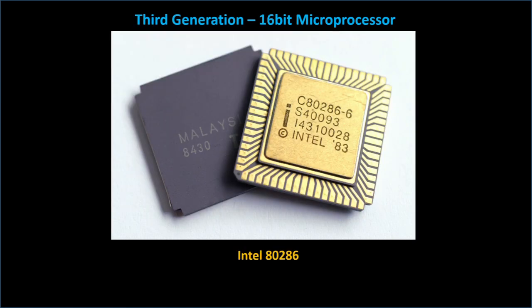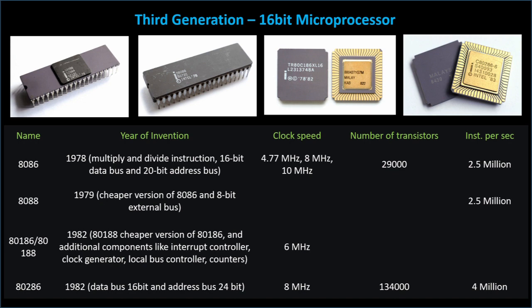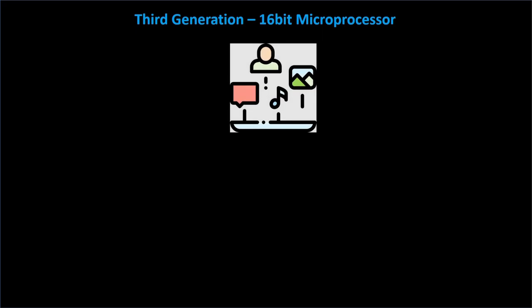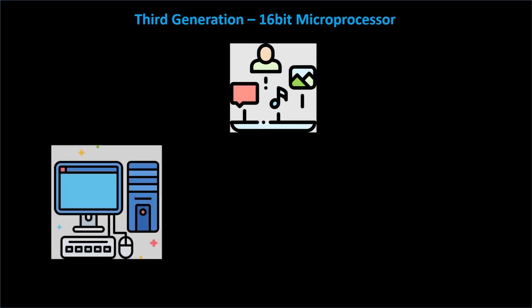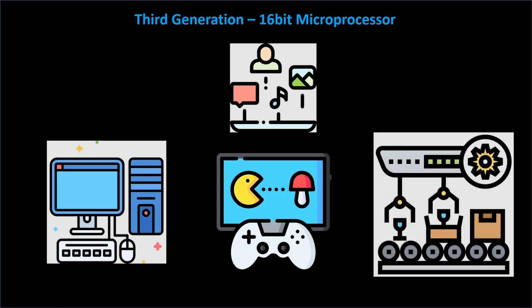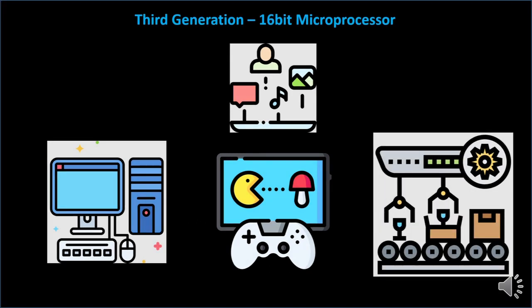The third generation of microprocessors, introduced in the early 1980s, were 16-bit microprocessors used in more advanced personal computers, gaming consoles, and other devices. The most popular 16-bit microprocessor of this generation was the Intel 80286, released in 1982, with a clock speed of 6 MHz and capable of around 1.5 million operations per second. These microprocessors had even larger memory and were capable of multitasking, paving the way for a wide range of new applications — from personal computers to industrial automation — and leading to a revolution in the world of technology.